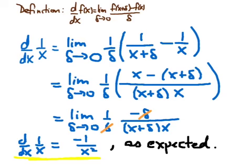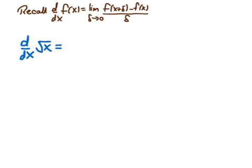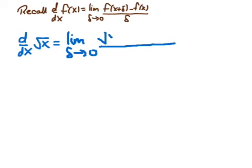We've seen how to get that result. The key point is that we manipulate the brackets to extract an overall power of delta to cancel the denominator, and then it is possible to take the limit as delta goes to naught safely. Now for the second example: we want to calculate the derivative of the square root of x from our definition. We need to manipulate this to extract a delta, so we'd like to get rid of the square roots — and there is a very useful algebraic technique to do this.